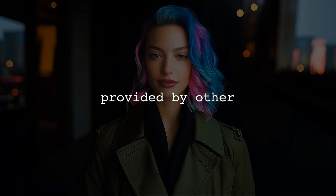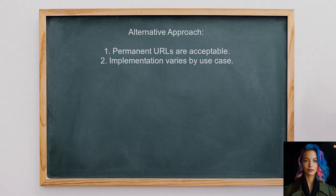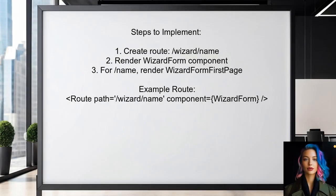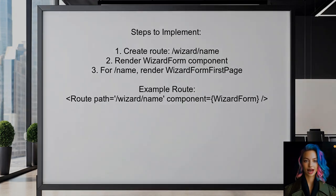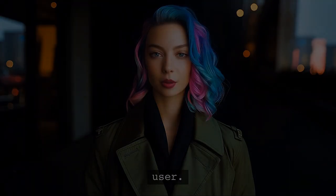Now let's look at answers provided by other users. One alternative approach suggests it's perfectly fine to implement permanent URLs in your Redux Form Wizard, noting that the implementation can vary based on your specific needs. To achieve this, create a route for each step of the wizard. For example, set up a route for slash wizard slash name that renders the wizard form component, and if the URL is slash name, display the wizard form's first page.